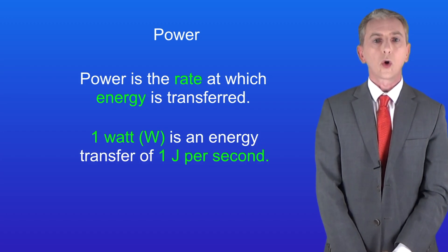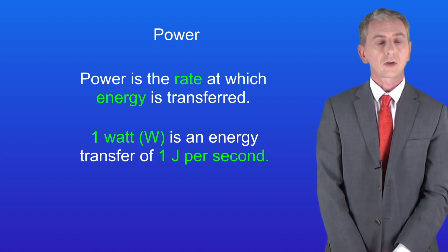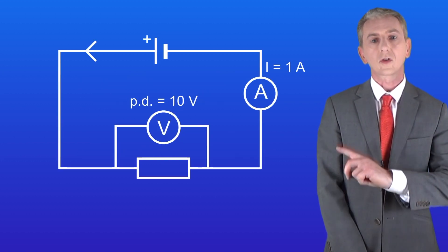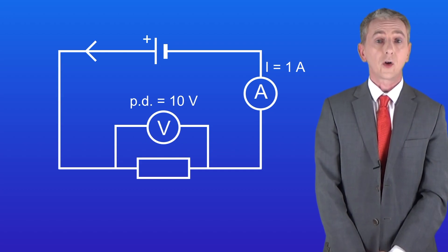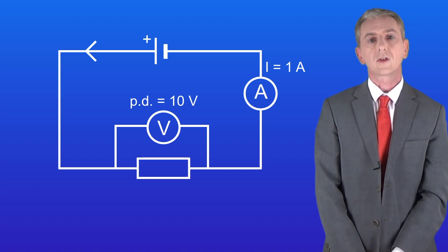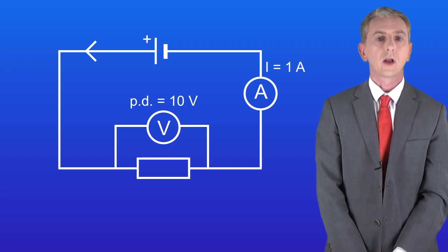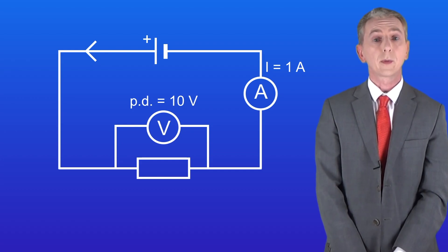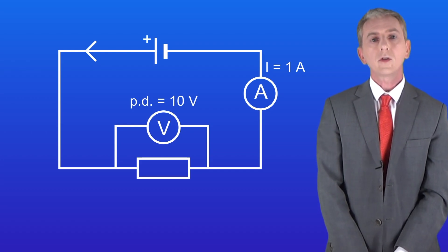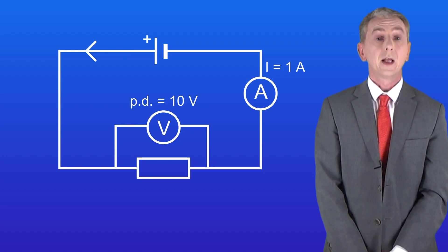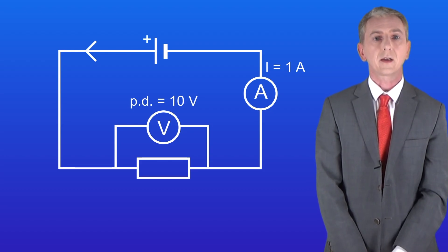Over the course of this topic we've seen that energy is transferred in electrical circuits such as this one. The potential difference of 10 volts across the resistor tells us that 10 joules of energy are transferred per coulomb of charge passing through the resistor, and the current of one ampere tells us that one coulomb of charge is flowing every second.